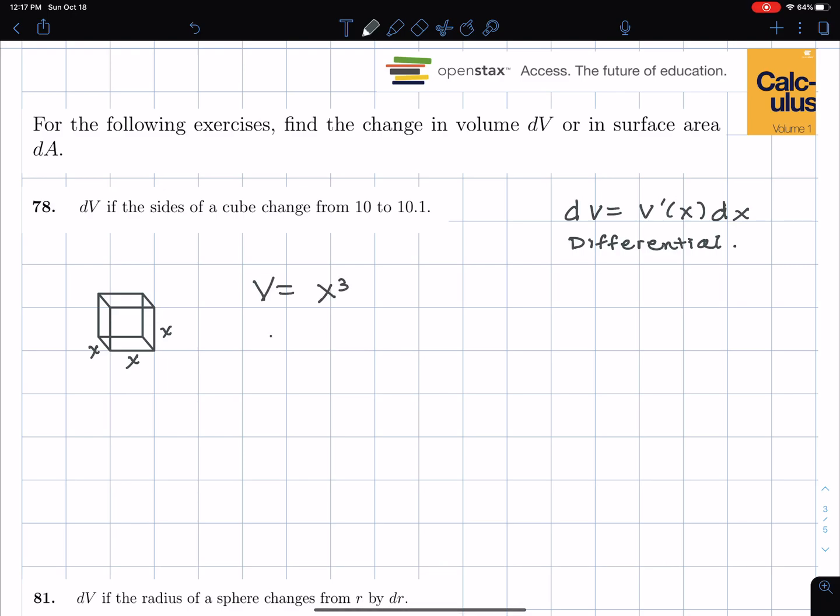And so when we find the differential, it's going to be dv times the derivative of x cubed, which is 3x squared dx. So I'm using the formula here. The dv is v prime of x dx. So that gives us our differential formula.